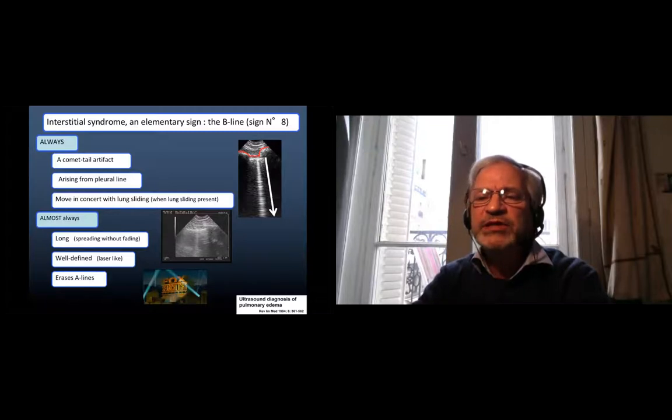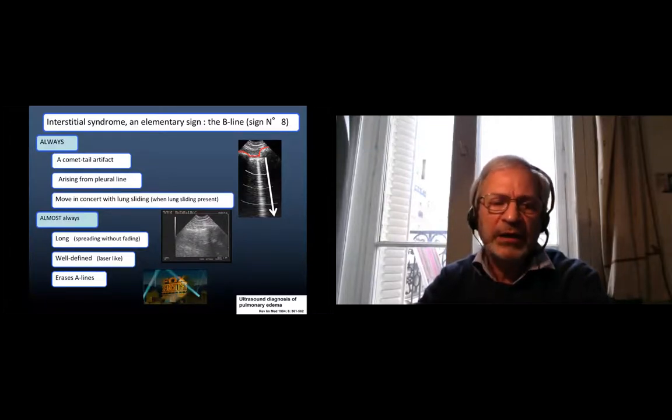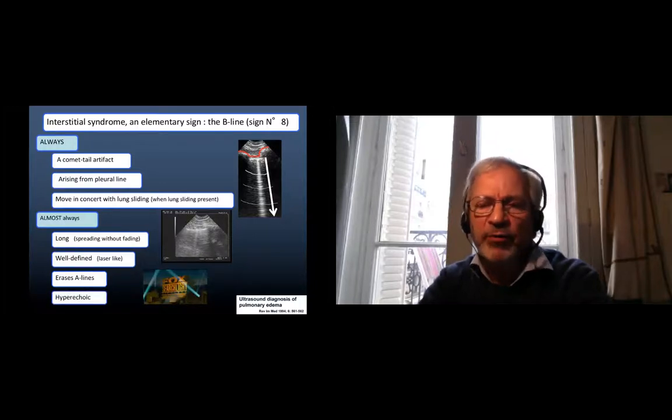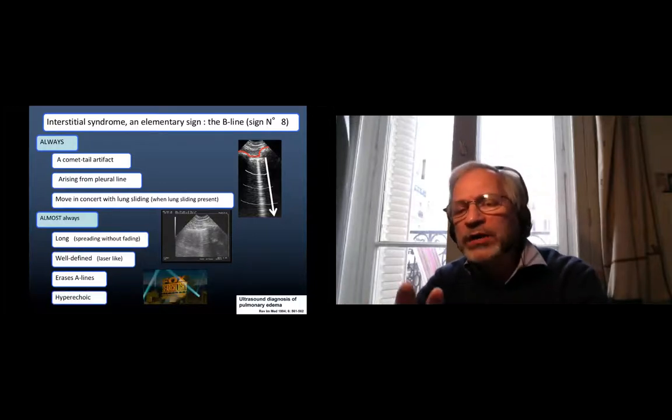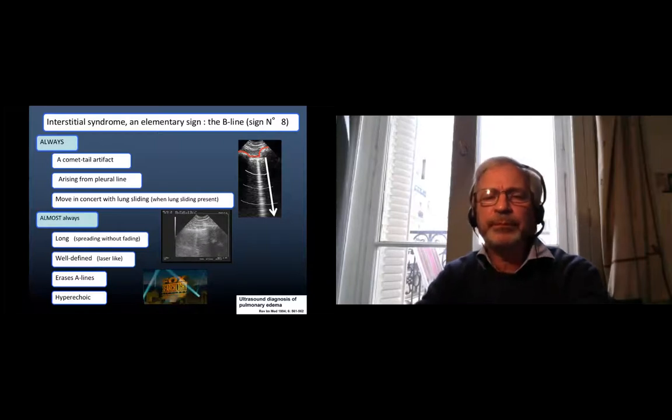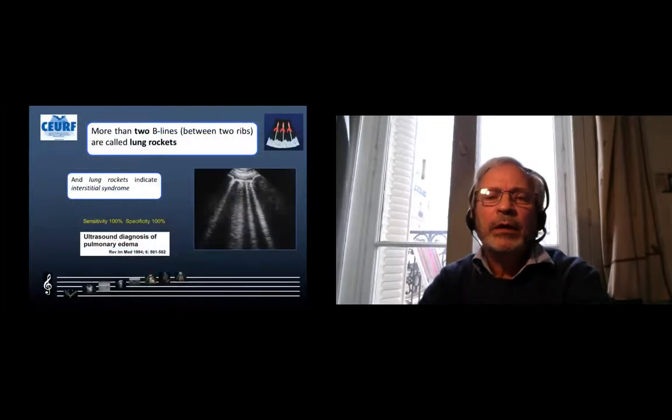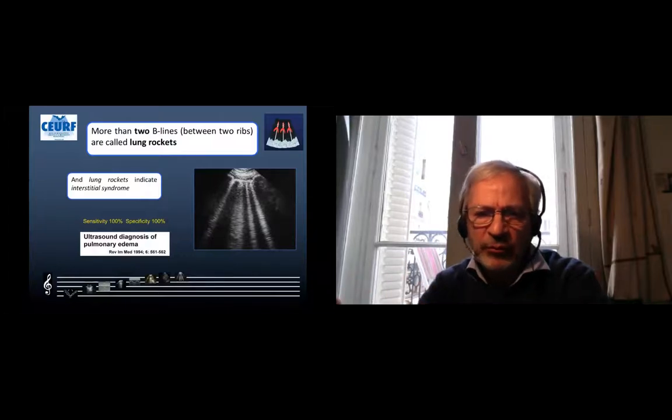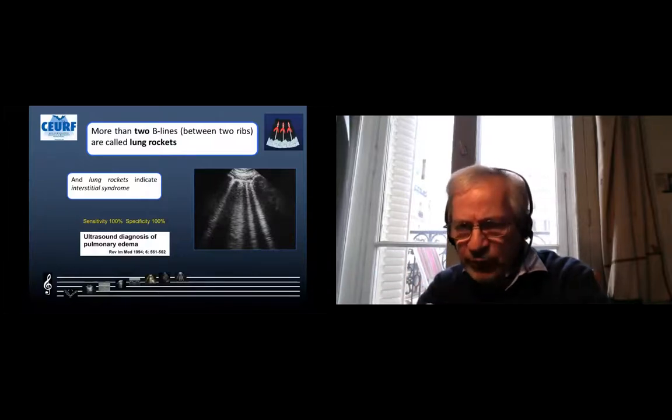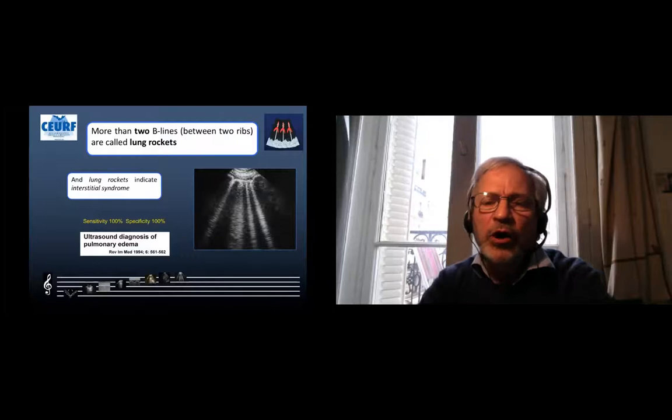Almost always it erases the A-lines that should be located at these areas. Almost always it is hyperechoic, that is white like the pleural line. More than two B-lines between two ribs, that is in a 25 millimeter view, are called lung rockets. Lung rockets indicate interstitial syndrome with full accuracy.